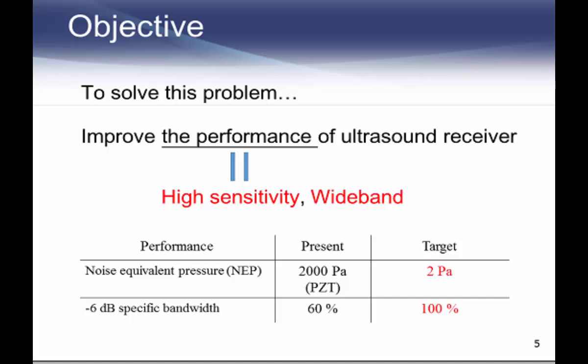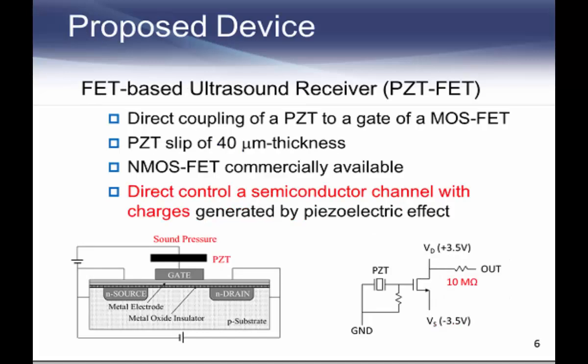To solve this problem, we focus on developing ultrasound receivers that aim to improve high sensitivity and wide bandwidth. Those are evaluated by noise equivalent pressure and specific bandwidth, and their targets were set to be 2 Pa and 100% respectively, compared with the current typical medical ultrasound transducer having 2,000 Pa and 60%. We propose a structure adjusting direct coupling of a PGT to a gate of a MOSFET and call this PGT-FET.